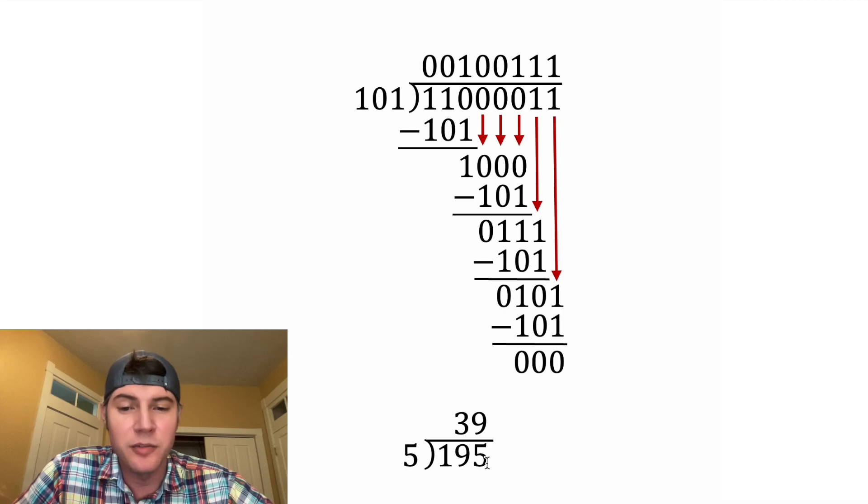And in decimal, that would be 195 divided by 5 equals 39. How exciting.